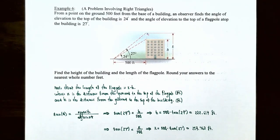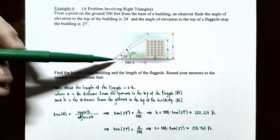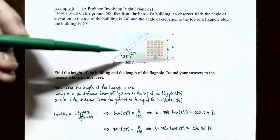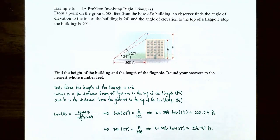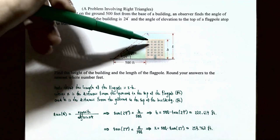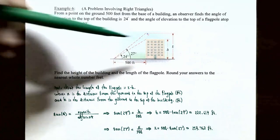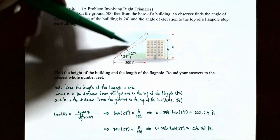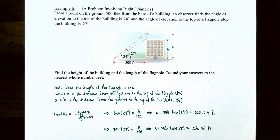In example six, from a point on the ground 500 feet from the base of a building, an observer finds the angle of elevation to the top of the building is 24 degrees, and the angle of elevation to the top of the flagpole atop the building is 27 degrees. We need to find the height of the building and the length of the flagpole, rounded to the nearest whole number of feet.